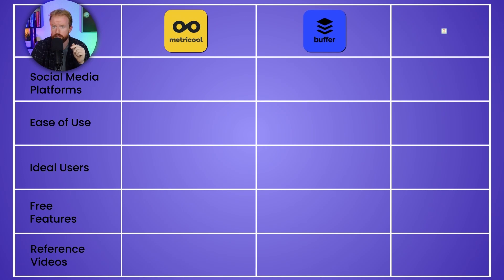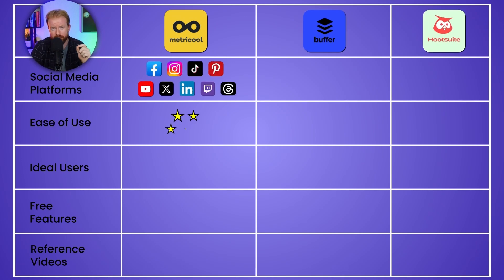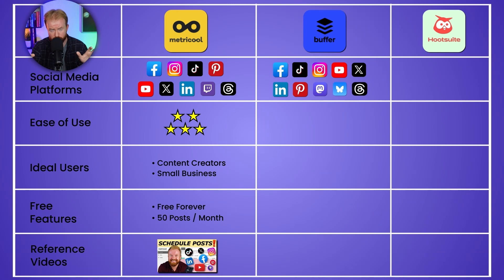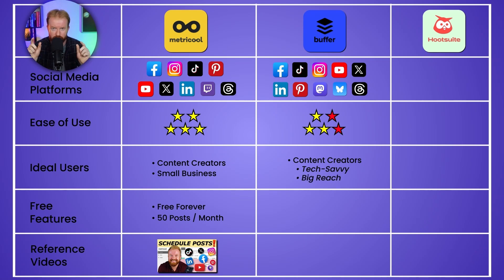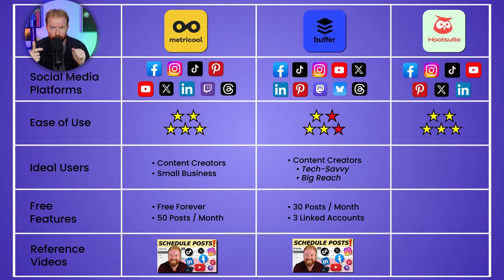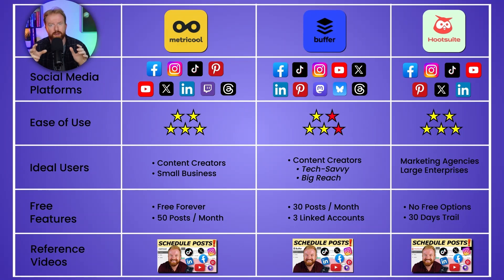So let's recap. Metricool is your free option — easy to use, best for content creators and small businesses; the free version is plenty good enough. I personally have been using Metricool's free version for two years. Buffer's advantage is the largest reach across social media platforms; it's best for tech-savvy content creators trying to maximize their reach on every platform. Hootsuite is the most user-friendly and probably the best overall tool, but at $100 a month it's best for mid-sized businesses, large enterprises, or marketing agencies who need to optimize their workflow.